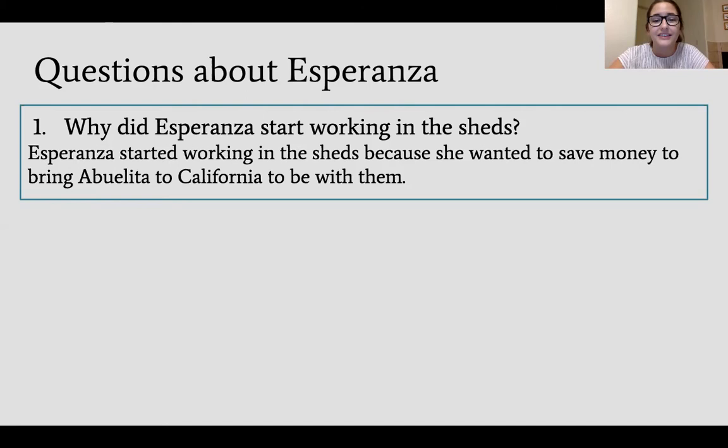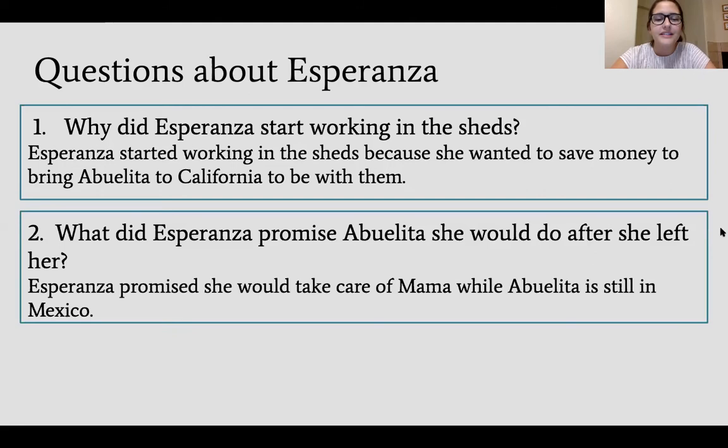For question two — what did Esperanza promise Abuelita she would do after she left? That's the part where I said I would put a sticky note, because it talked about the promise. Abuelita had asked Esperanza to promise that she would finish the blanket and that she would take care of Mama while Abuelita was still in Mexico.